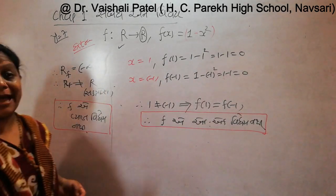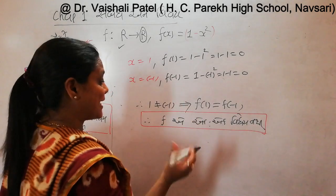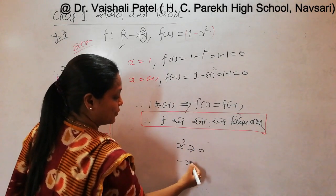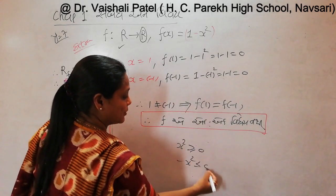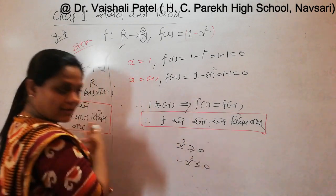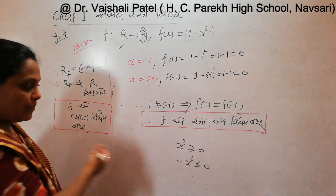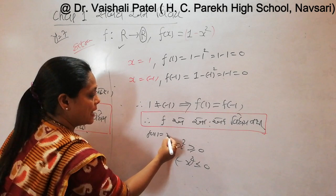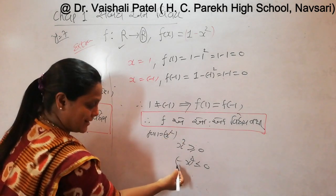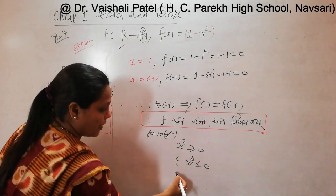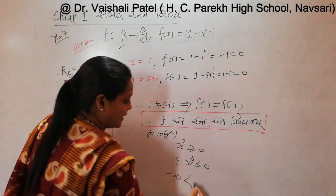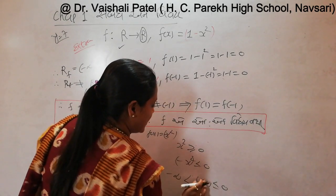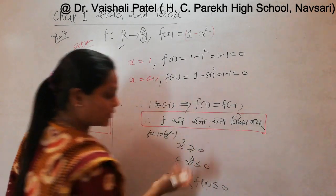So f of x is equal to minus x squared. Since minus x squared is less than or equal to 0, we can write: minus infinity is less than f of x, which is less than or equal to 0.